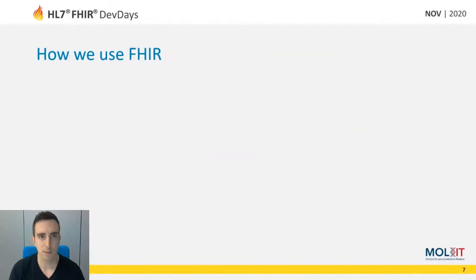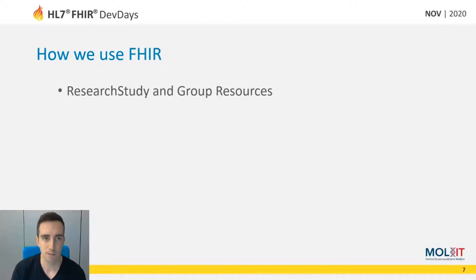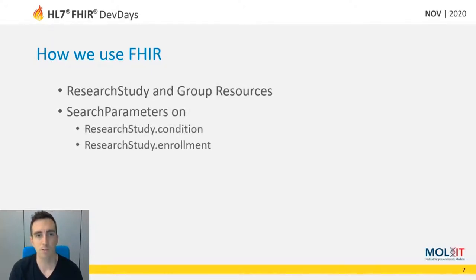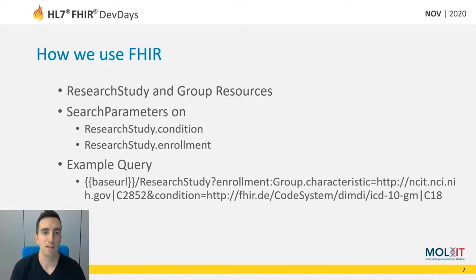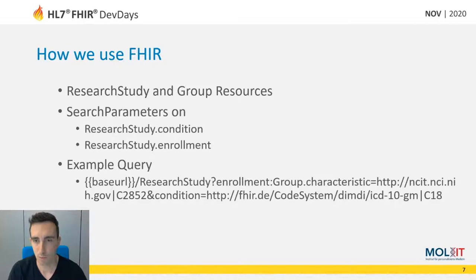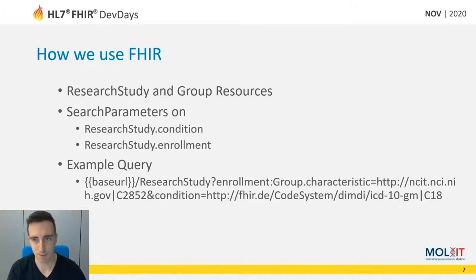So how does that translate to FHIR? We are using the ResearchStudy and the Group resource. We are implementing some search parameters on the condition and enrollment of the ResearchStudy. In an example query, we have enrollment which is NCI-coded and the condition which is ICD-10 German modification coded.